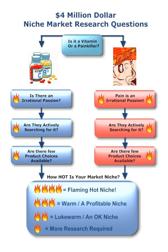If something is an irrational passion — which is question number one, which I learned from my friend Eben Pagan during seminars — you automatically give it a flame. You can see that four flames is a flaming hot niche, three flames is a warm profitable niche, two flames is a lukewarm and okay niche, and one flame is more research required or get out. It doesn't mean you need to abandon a niche at one flame; you need to understand the vertical and look at your client's long-term business strategy.